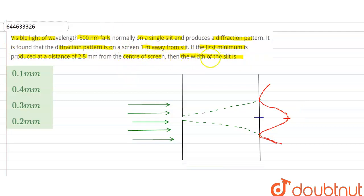So we have to find the width of the slit, small d. These are our options: option A, 0.1 mm; option B, 0.4 mm; option C, 0.3 mm; and option D, 0.2 mm.